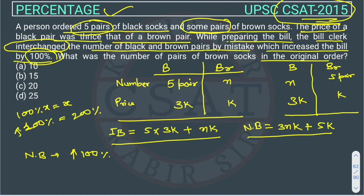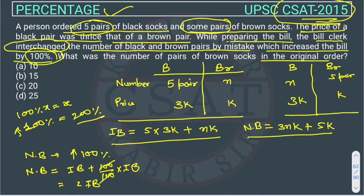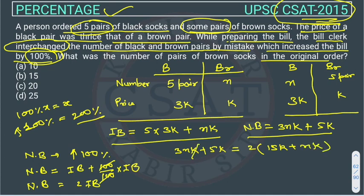Using the unitary method: new bill = initial bill + 100 percent of initial bill, which equals 2 times the initial bill. So: 3nk + 5k = 2 × (15k + nk). The initial bill expands to 15k + nk (since 5 × 3k = 15k). We can cancel k from both sides.